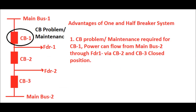In the one and half breaker system, two feeders are controlled via three circuit breakers. Isolator and CT positions have been omitted from the diagram for ease of understanding. This type of system is used in 400 kV GIS systems and also in 765 kV AIS substations.